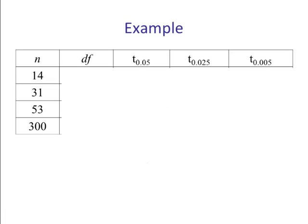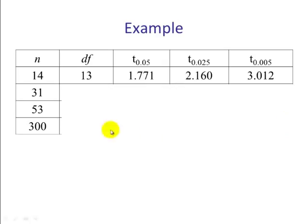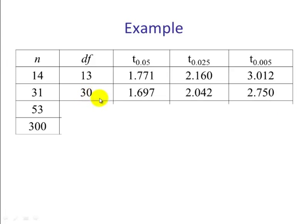Okay, let's do some examples here reading in the table. So if the sample size is 14, our degrees of freedom is 13, and these are our corresponding t values for a degree of freedom of 13. So again, this is going to correspond to a 90%, this is for a 95% confidence interval, and this will be a 99%. If we go n is 31, degrees of freedom of 30, and we have our corresponding t values for the different confidence levels.